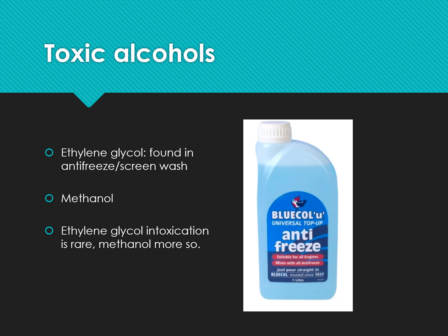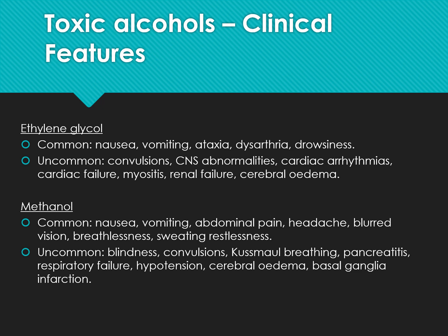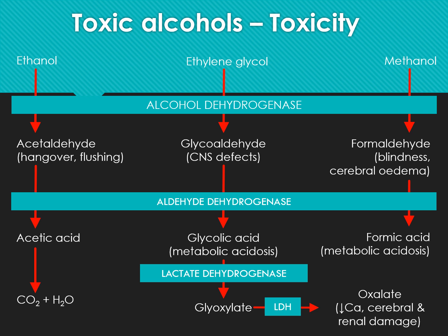Toxic alcohols include ethylene glycol (found in antifreeze and screen wash) and methanol. Ethylene glycol intoxication is rare; methanol is more common. Features of ethylene glycol include nausea, vomiting, ataxia, dysphoria, drowsiness, and uncommonly convulsions, CNS abnormalities, cardiac arrhythmia, cardiac failure, and myositis. Methanol features include nausea, vomiting, abdominal pain, headache, visual disturbance, breathlessness, sweating, and restlessness. A diagram shows the alcohol dehydrogenase pathway leading to toxic metabolites such as glycolic acid.